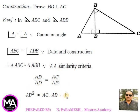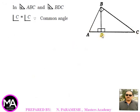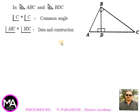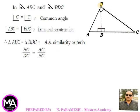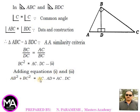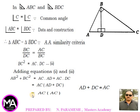Therefore AB/AD = AC/AB, giving AB² = AC·AD — equation 1. In triangles ABC and BDC, angle C = angle C (common), angle ABC = angle BDC (from data and construction), so triangle ABC ~ triangle BDC by AA similarity. Therefore BC/DC = AC/BC, giving BC² = AC·DC — equation 2. Adding equations 1 and 2: AB² + BC² = AC·AD + AC·DC = AC(AD + DC) = AC·AC = AC². Hence proved.